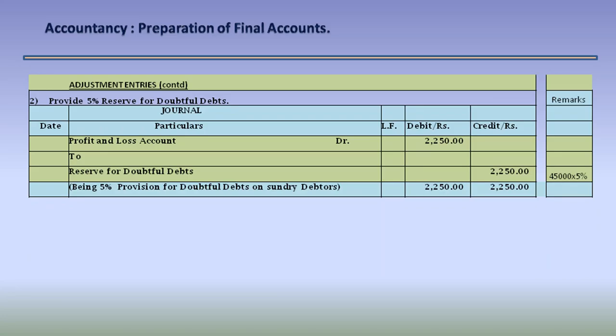Adjustment entry 2: provide 5% reserve for doubtful debts. We need to debit Profit and Loss Account and credit Reserve for Doubtful Debts with Rs. 2,250. The sundry debtors total Rs. 45,000 and 5% of that comes to Rs. 2,250. This adjustment entry is to be effected into the final accounts.